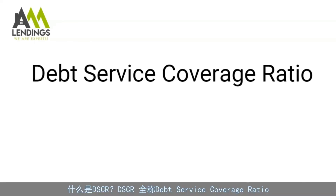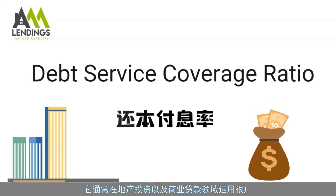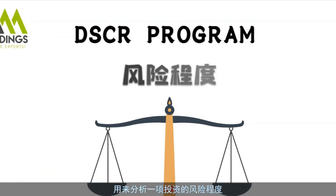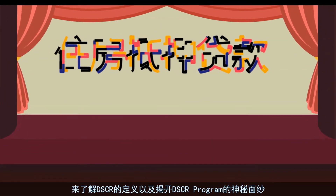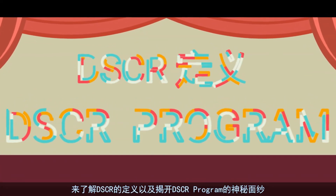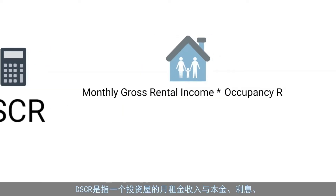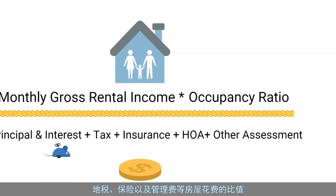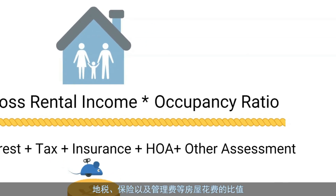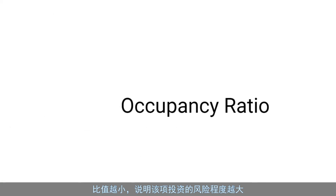DSCR is short for debt service coverage ratio. It is widely used in real estate investment and commercial loans to analyze the degree of risk of an investment. In the residential mortgage investment industry, DSCR refers to the ratio of monthly rental income of an investment property to housing costs such as principal, interest, tax, insurance, and HOA. The smaller the ratio is, the greater the risk of the investment.